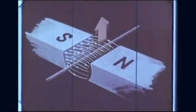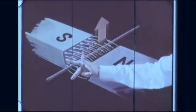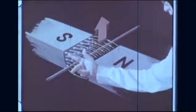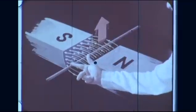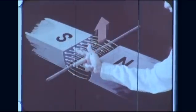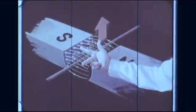To determine current direction, we use Fleming's right-hand rule for generators. Extend the thumb, forefinger, and center finger of your right hand so they are at right angles to one another. Point the forefinger in the direction of the magnetic field from the north to the south pole, and the thumb in the direction of the conductor's motion. Your center finger then points in the direction of the induced current. Remember: F is for forefinger and field, T is for thumb and thrust, and C is for center finger and current.